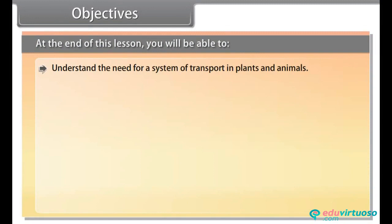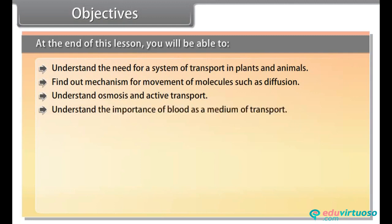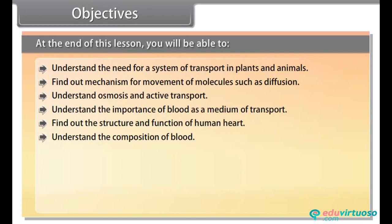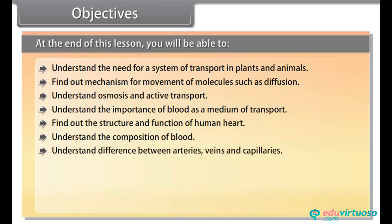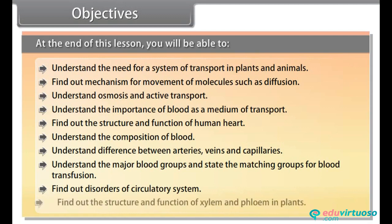At the end of this lesson, you'll be able to: understand the need for a system of transport in plants and animals; find out mechanisms for movement of molecules such as diffusion; understand osmosis and active transport; understand the importance of blood as a medium of transport; find out the structure and function of human heart; understand the composition of blood and the difference between arteries, veins and capillaries; understand the major blood groups and matching groups for blood transfusion; find out disorders of the circulatory system; and find out the structure and function of xylem and phloem in plants.